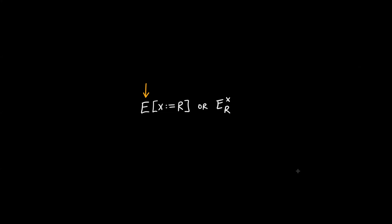In this notation, E represents our original expression. From our original expression, we're going to be taking some variable that may or may not exist in the original expression — in this case, the variable is X. This symbol here means we're going to be taking all occurrences of the thing on the left and replacing them with the thing on the right. So we are taking all occurrences of X and replacing them with R.